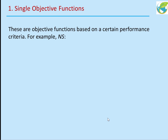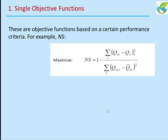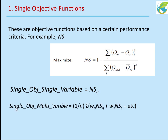Single objective functions are something you are all familiar with. Here you use a certain performance criteria such as Nash-Sutcliffe, and then you formulate your objective function. For a single objective single variable, you use Nash-Sutcliffe for discharge, for example. Or you could have a single objective for multiple variables, where you average different variables — for example, discharge and sediment — and average their single objective functions to get the objective function for multiple variables.